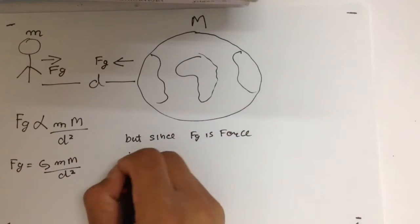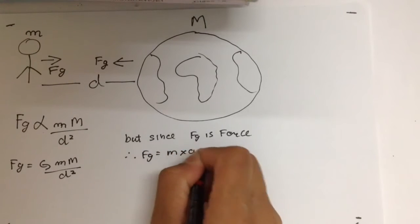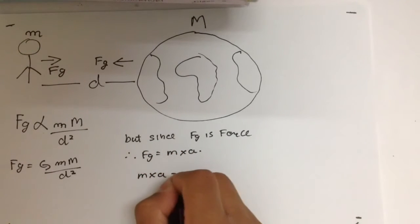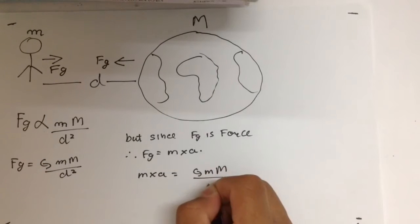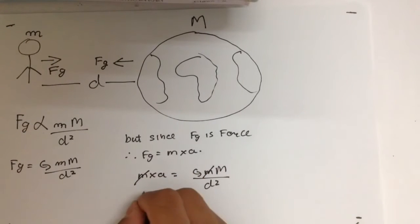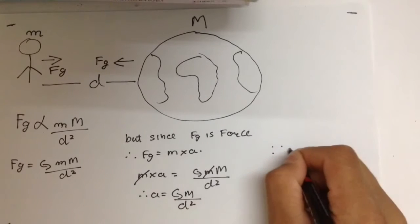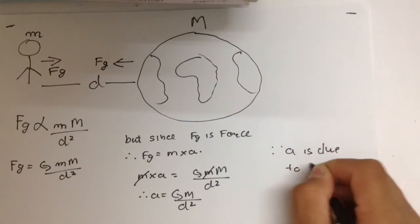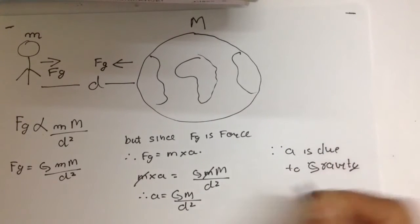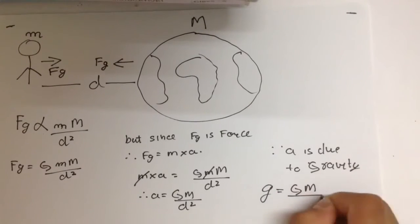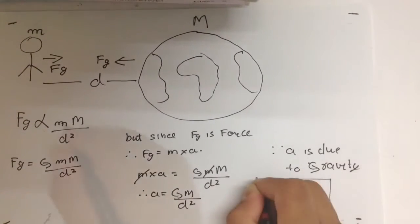But since FG is the force acting on you, it should be equal to the product of your mass and acceleration you are undergoing. Solving the equation further, we get that acceleration is equal to gravitational constant times capital M upon D square. Now, since this acceleration is because of gravity, we get acceleration due to gravity equals G times M upon D square. That's the equation.